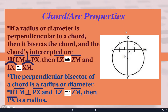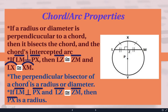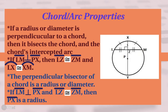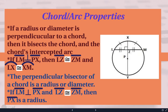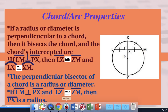We can also reverse this process. If you have a chord with a perpendicular bisector — a segment that slices it in half and hits it at a 90-degree angle — then that segment must be the radius or the diameter, depending on what type of segment you're looking at. We'll use these properties to help us solve the following example.